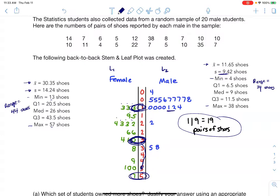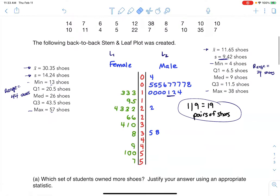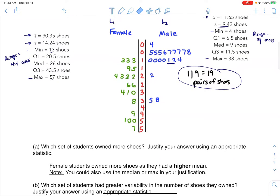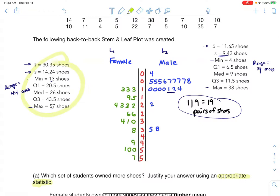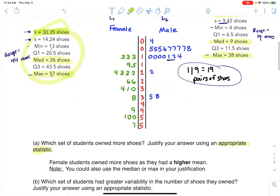So moving on from there, let's take a look at my first question. The first question is going to ask us which set of students owned more shoes and justify that using an appropriate statistic. So when you see appropriate stat, you've learned a bunch of stats, you could use any of them, but you want to use the ones that are appropriate. So when I'm talking about who owns more, the things that come to mind in that case are I think of the mean, I think of the median. If I look at the mean, it was 30.5 here and only 11.65 here. I also see that the median is higher on the female side and also the max. I could see you using the max to justify that. So whichever stat you choose, that's great. You write it up as a sentence and you see this comparative language. And I said, also, you could have used the median or max in your justification.